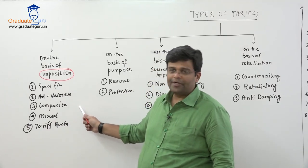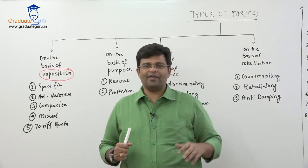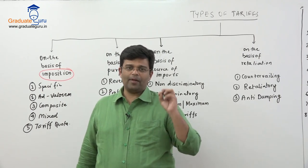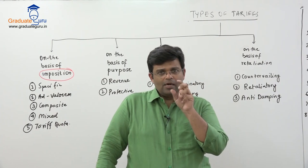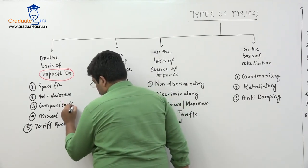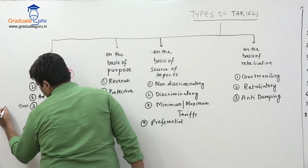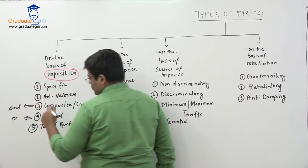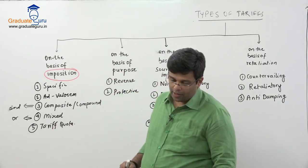The third type is a compound or composite tariff — a combination of both specific and ad valorem. Mixed tariff means either one applies — for example, 8% or 100 rupees, whichever is higher. Composite means both are applied together. Finally, you have the tariff quota, which sets a limit: up to a certain quantity, a low or zero tariff applies; beyond that limit, a very high tariff is imposed.